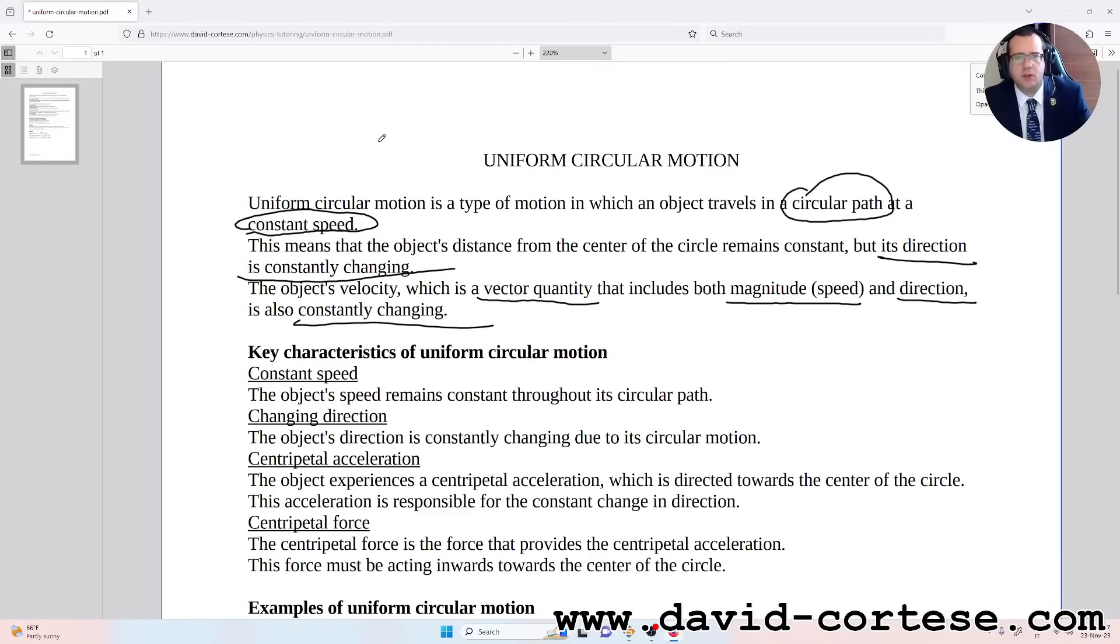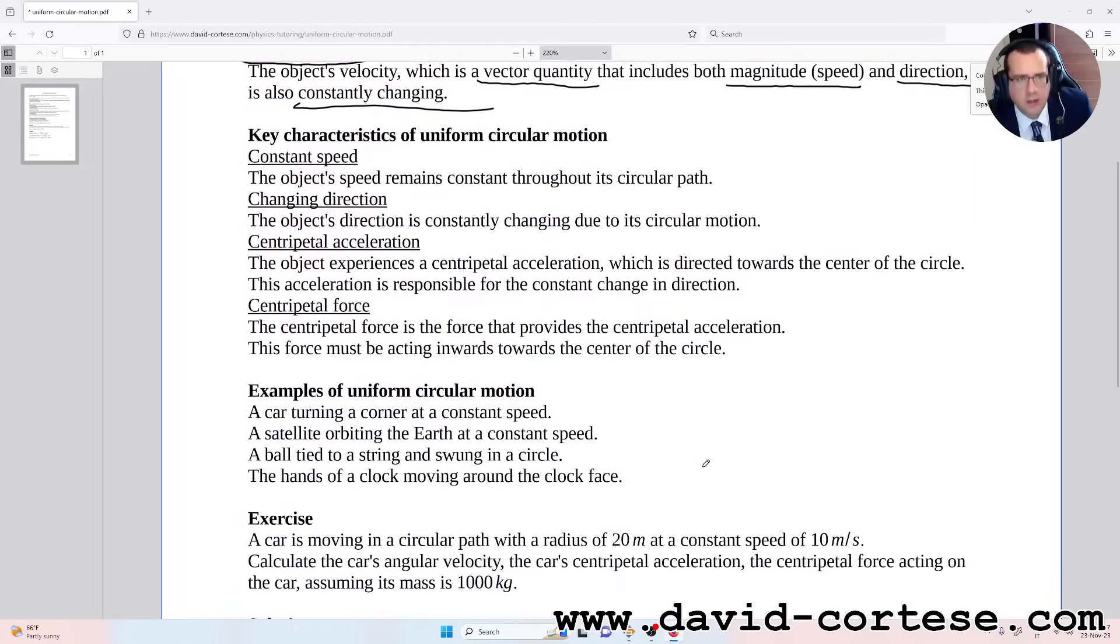Key characteristics of uniform circular motion: constant speed - the object's speed remains constant throughout its circular path. Changing direction - the object's direction is constantly changing due to its circular motion. Centripetal acceleration - the object experiences a centripetal acceleration which is directed towards the center of the circle. This acceleration is responsible for the constant change in direction.